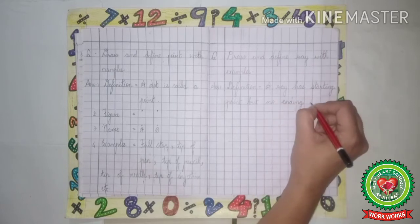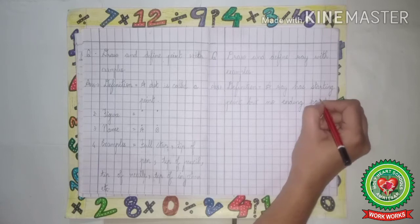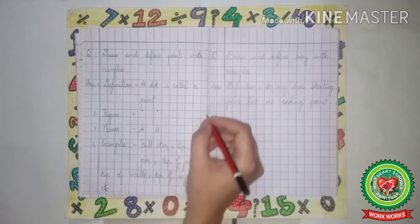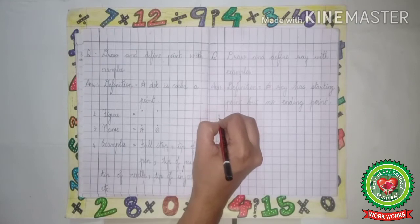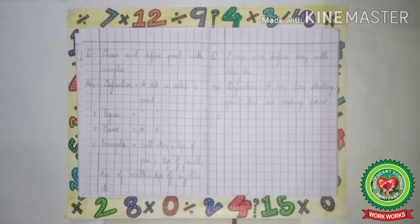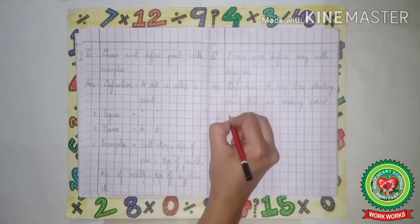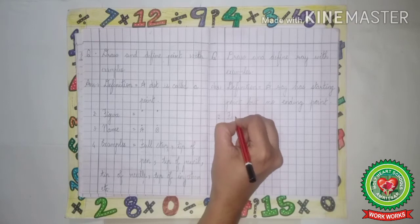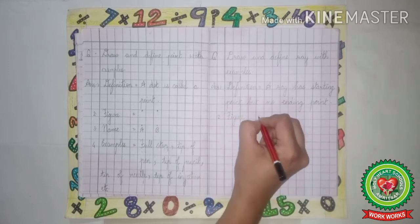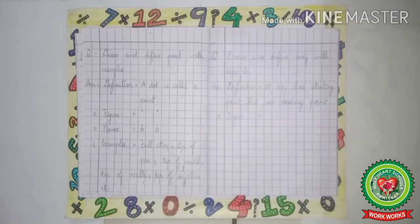Full stop. Now leave one line. Two dot. Now which is the second point? The second point is figure. So we will write figure equals two. Now we will draw a line in two boxes with the help of scale.